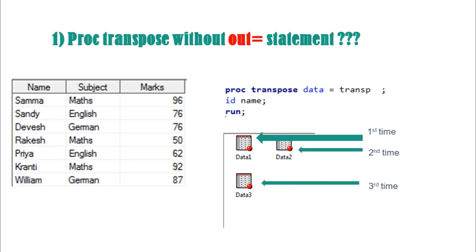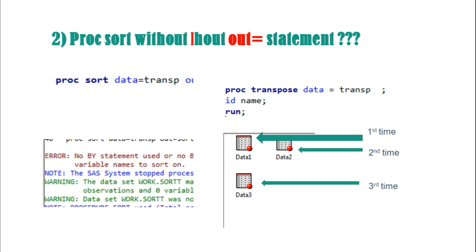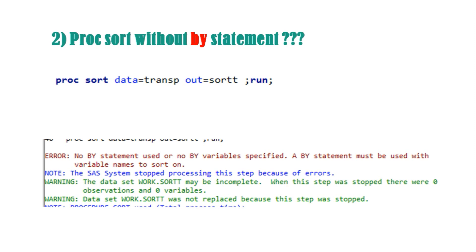The first question is: what happens if you use PROC TRANSPOSE without the OUT= statement? Generally in PROC TRANSPOSE we use OUT= and put in a dataset name. If you are not putting the OUT= statement, the first time you run it, a dataset called DATA1 is created; the second time DATA2 is created; the third time DATA3 is created.